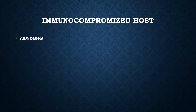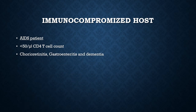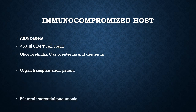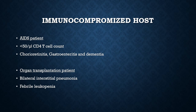In immunocompromised hosts, CMV produces markedly severe infection in immunosuppressed individuals, most due to reactivation of their own latent virus. In AIDS patients with CD4 T-cell count less than 50 per microliter, CMV may cause chorioretinitis, gastroenteritis, dementia, and other disseminated infections. In organ transplant patients, CMV is probably the most common viral infection, usually occurring between one and four months post-transplant. Bilateral interstitial pneumonia is the most common form, seen in 15 to 20 percent of bone marrow transplant recipients, while febrile leukopenia is seen among solid organ transplant recipients.